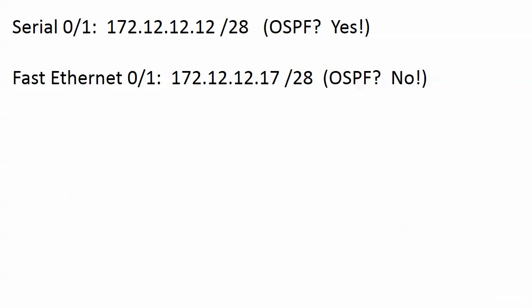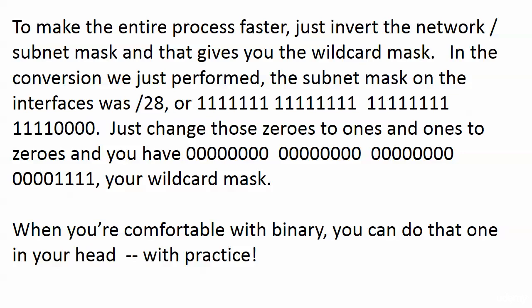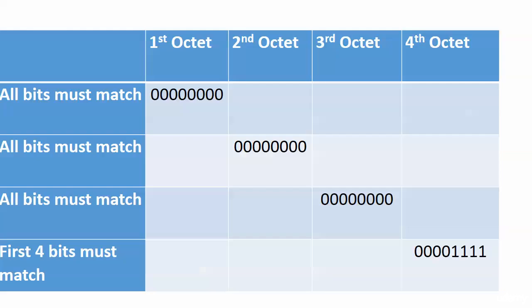With a subnet mask of slash 28, we write it out as a wildcard mask by inverting it — changing ones to zeros and zeros to ones. That means all zeros for the first 24 bits, and in the fourth octet the first four bits must match. The subnet mask has 28 ones and four zeros at the end; the wildcard mask has 28 zeros at the beginning and four ones at the end. Converted to dotted decimal, the wildcard mask is 0.0.0.15, because those four bits at the end — 8, 4, 2, and 1 — add up to 15.